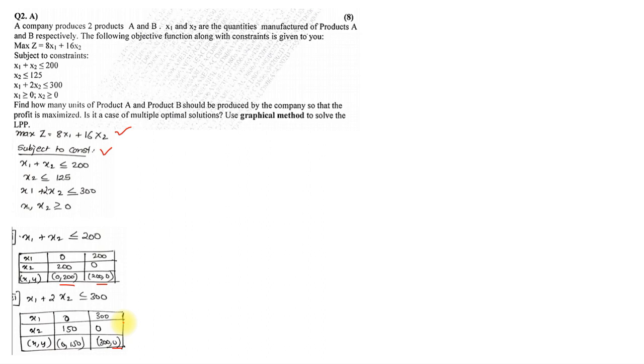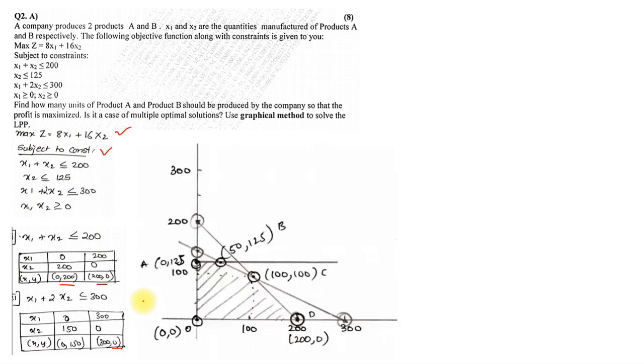Once we have the maximum Z and the coordinates, we can start with the plotting part. This is how your graphical plotting should have looked. We took the first equation 0,200 and 200,0, then 0,150 and 300,0, and made a line. Last one, x2 equals 125, so one straight perpendicular line comes there. Now since it is a maximization sum, the coordinates have been marked in dark. We have 1, 2, 3, 4, 5 and this becomes our feasible region.